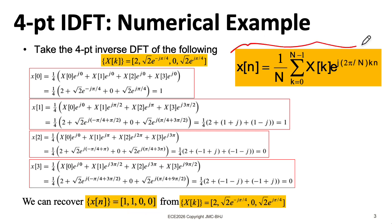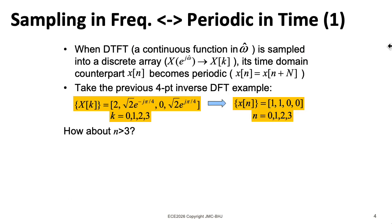There's something interesting about the way this inverse formula operates. In our head, we were thinking about a sequence x of n which is zero outside of this range of n equals 0, 1, 2, 3. But if we just plug numbers into the inverse formula that are outside of the range, we see that formula gives us a function that's periodic with period capital N.